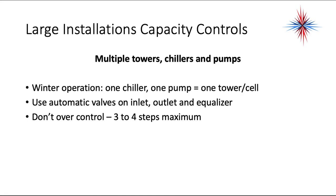When you have multiple towers, chillers, and pumps for winter operation: one chiller, one pump equals one tower or cell. Use automatic valves on the inlets, outlets, and equalizers. Don't over-control — three to four steps at a maximum, and then you have to stop, wait, and see what happens.